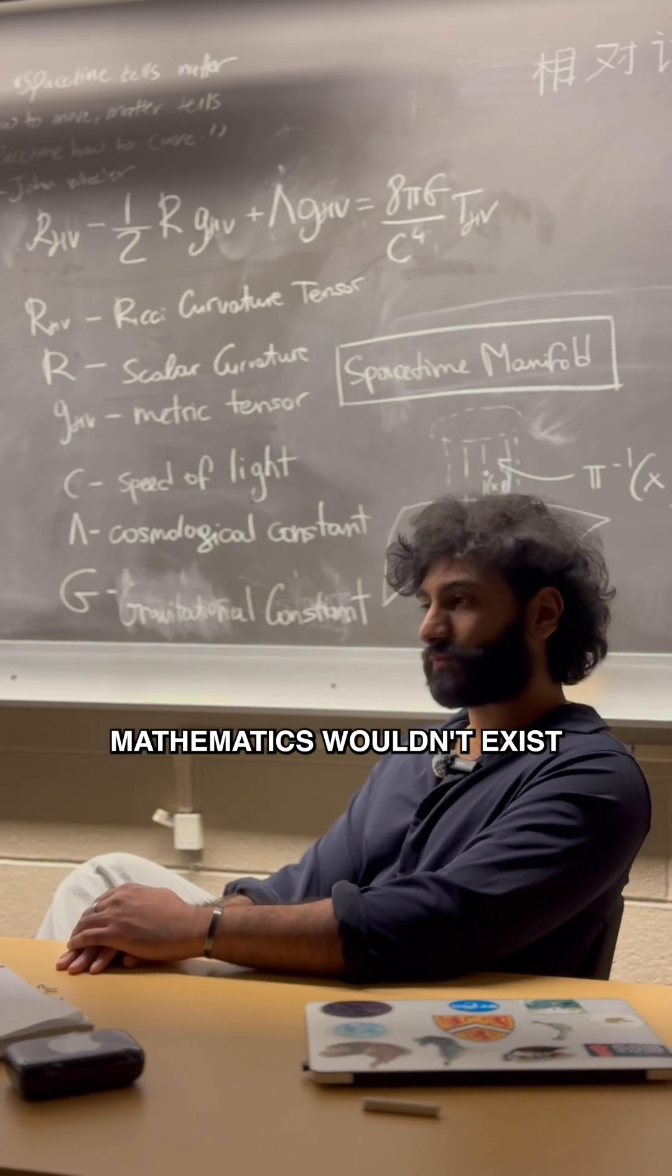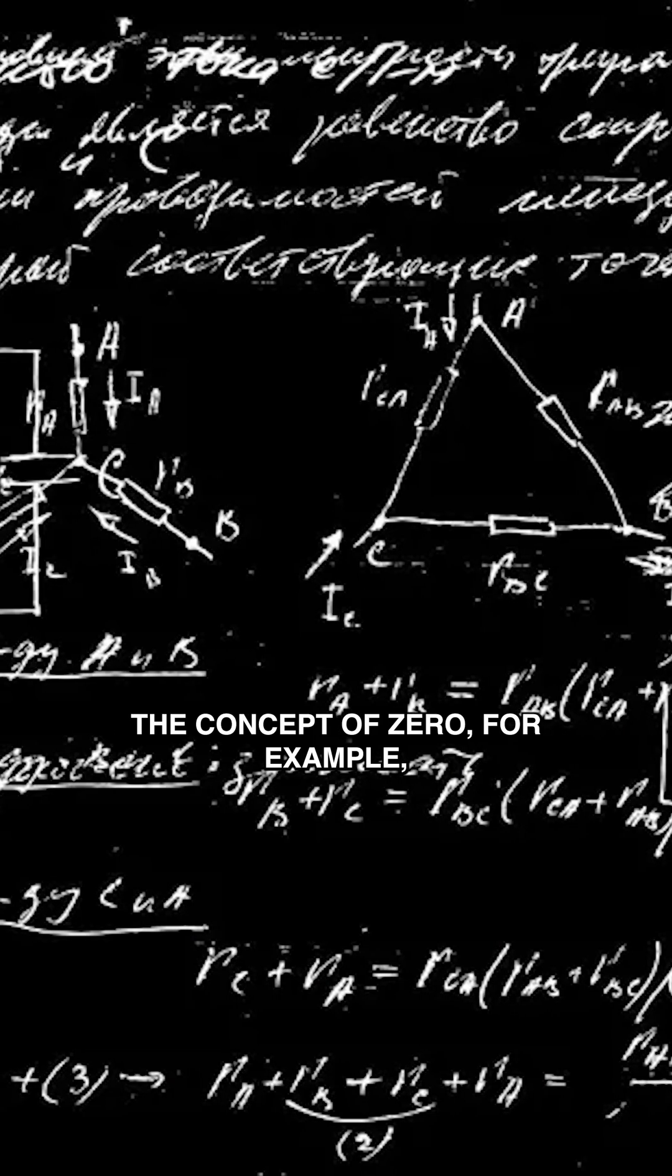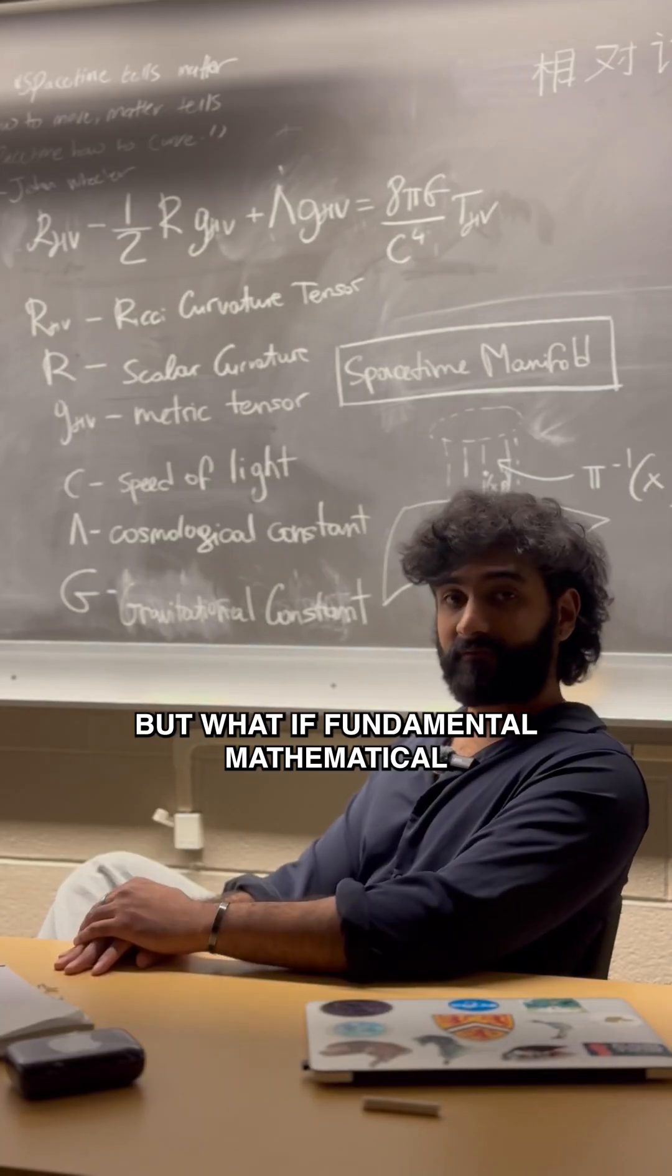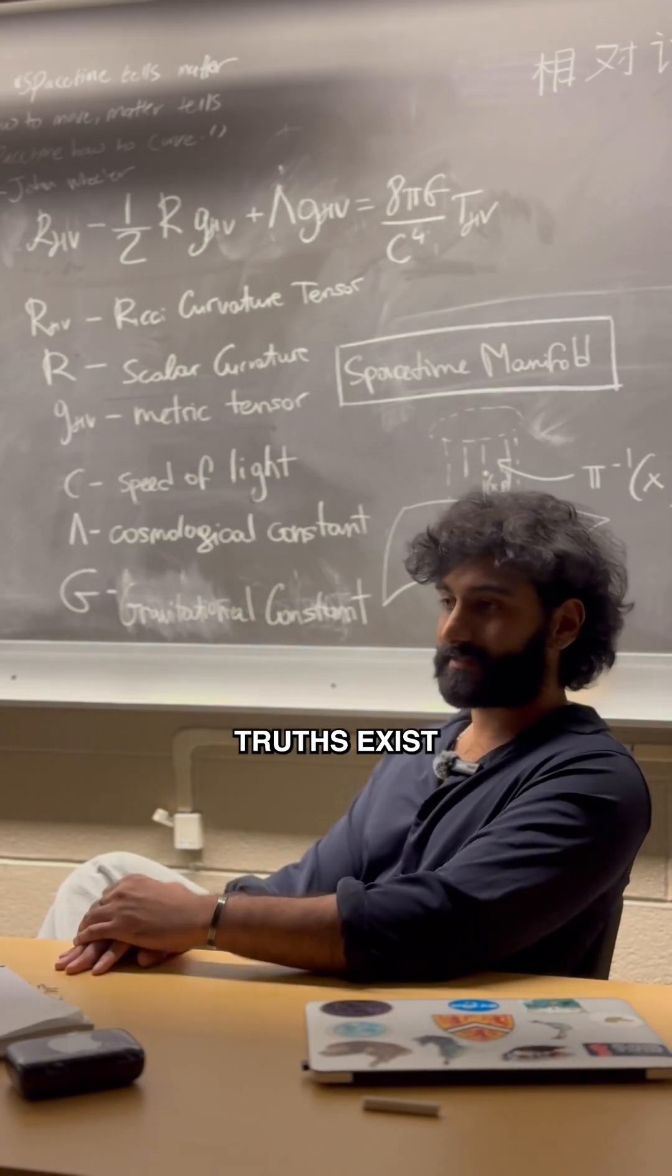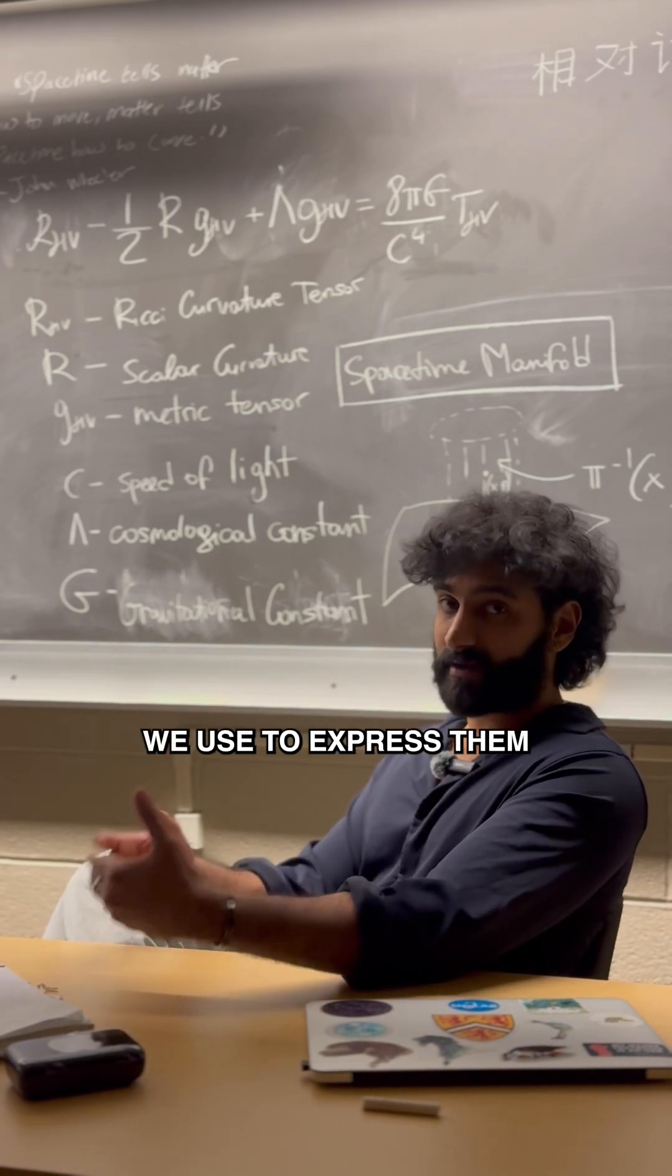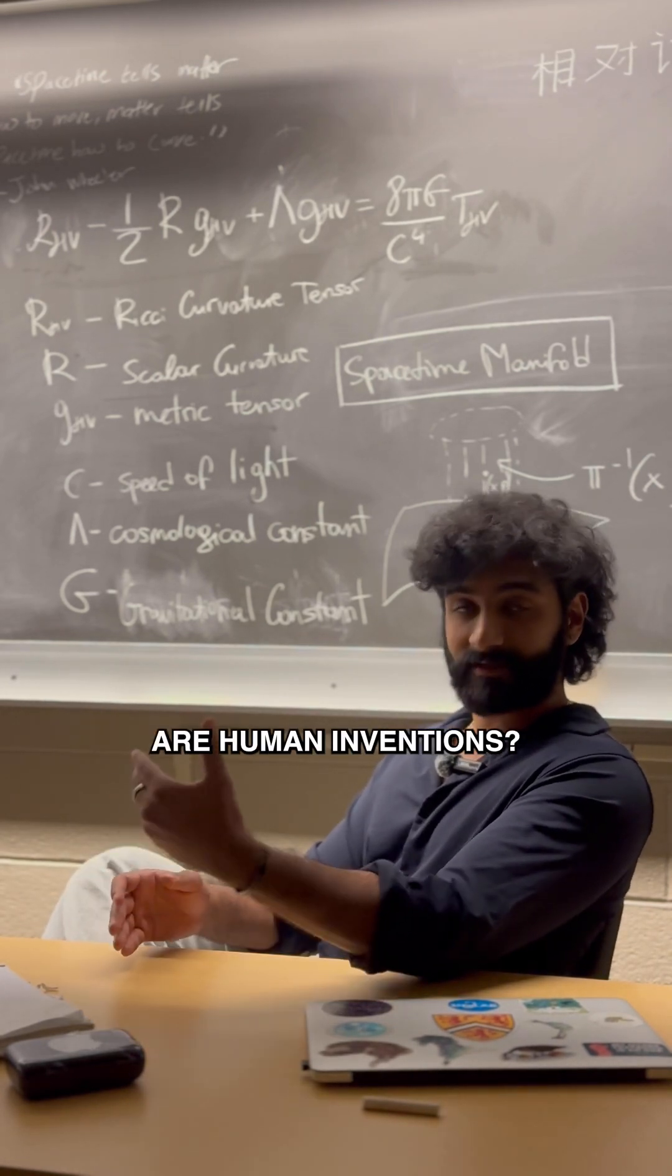Without humans, mathematics wouldn't exist. The concept of zero, for example, was invented by humans. But what if fundamental mathematical truths exist independently of the human mind, but the systems we use to express them are human inventions?